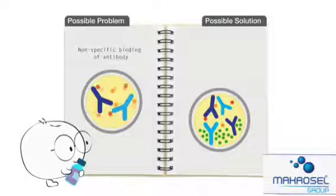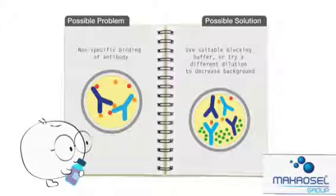High background may also be due to non-specific binding of the antibody, therefore you may want to try using a suitable blocking buffer or a different dilution factor to decrease background.